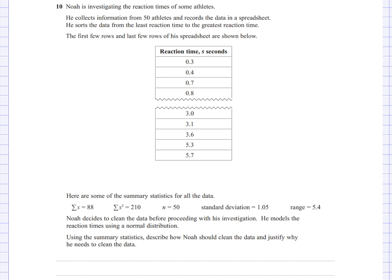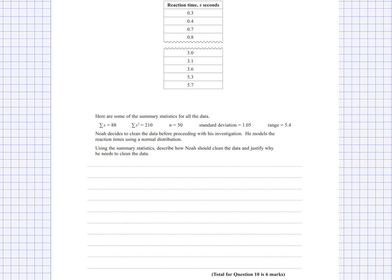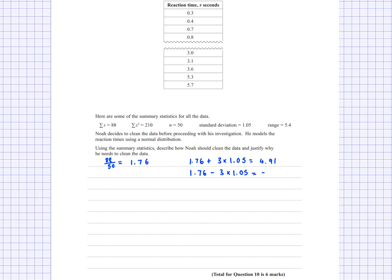Let me write out the answer. First, find the mean: 88 divided by 50 equals 1.76. Standard deviation is given as 1.05. Now calculate: 1.76 plus 3 times 1.05 equals 4.91 (upper limit), and 1.76 minus 3 times 1.05 equals negative 1.39 (lower limit).